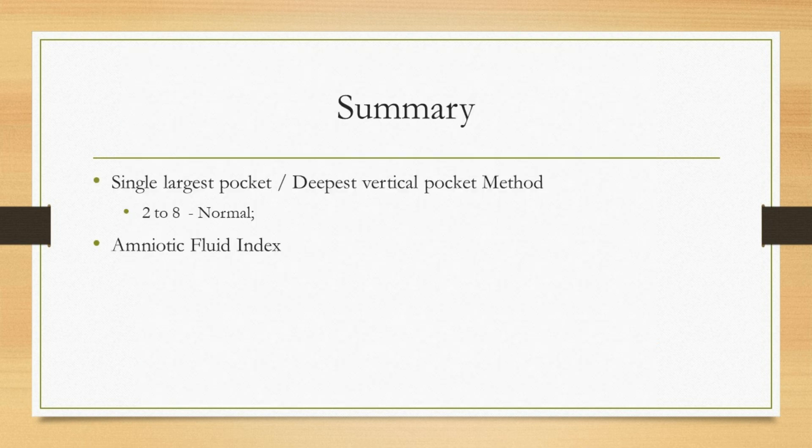To summarize, we have the deepest vertical pocket method and the amniotic fluid index measurement to measure the amniotic fluid volume. In the single largest pocket or deepest vertical pocket method, 2 to 8 centimeters is the normal range; however, in some countries up to 10 centimeters is taken as normal. Regarding the amniotic fluid index, the uterus is divided into four quadrants, and in each quadrant the single largest vertical pocket is measured; all four quadrant measurements are added to form the AFI. Remember to hold the probe perpendicular to the floor.